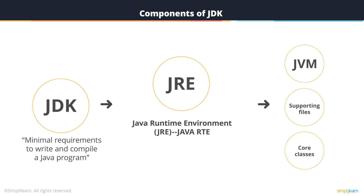The JVM is key to both JDK and the JRE, because it is embedded into them. Whichever Java program is being run, the JVM is that component of Java that executes a program line by line, thus giving itself the role of an interpreter.